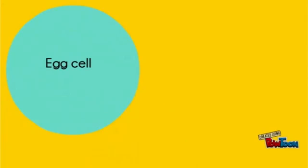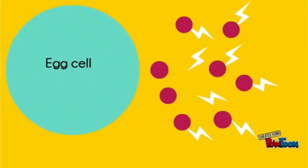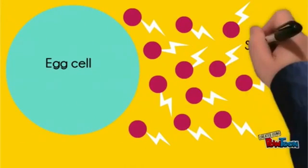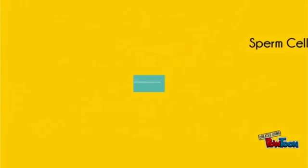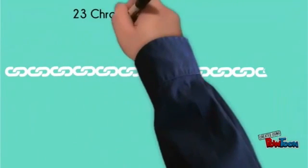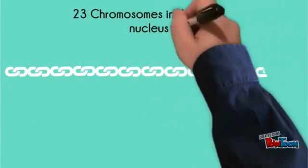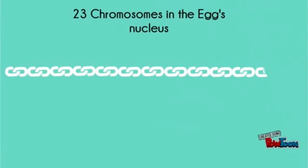First, we need to look at chromosomes — what they are and how they can change a baby. During fertilisation, 23 pairs of chromosomes are present, 46 in total. A chromosome is genetic material, the thing that makes you different from a sibling or a cousin, and it is stored in the nucleus of a cell.